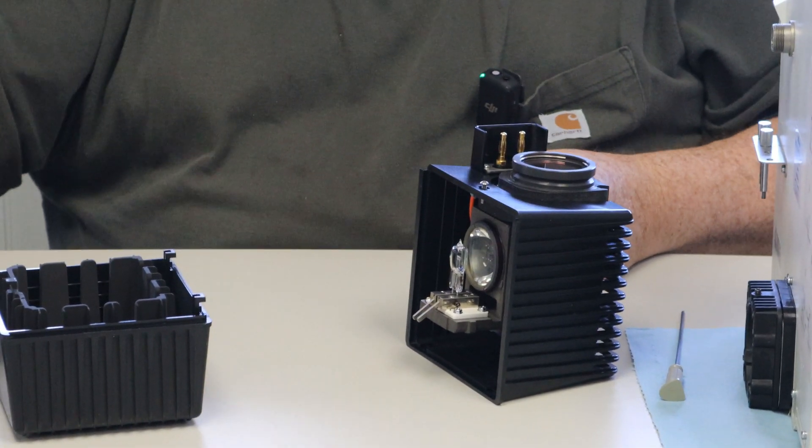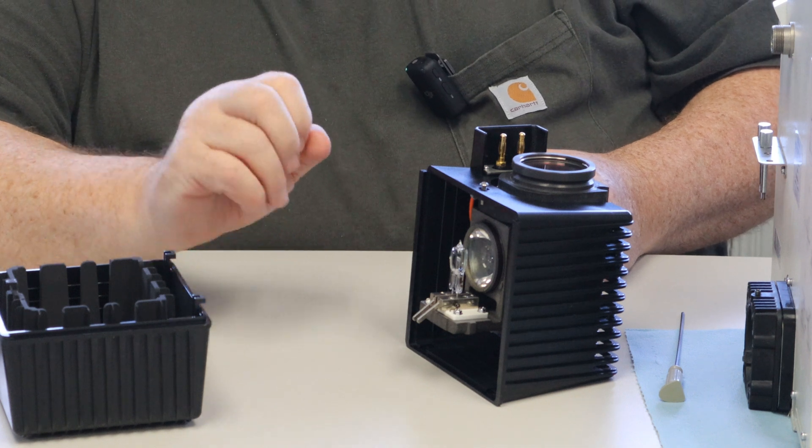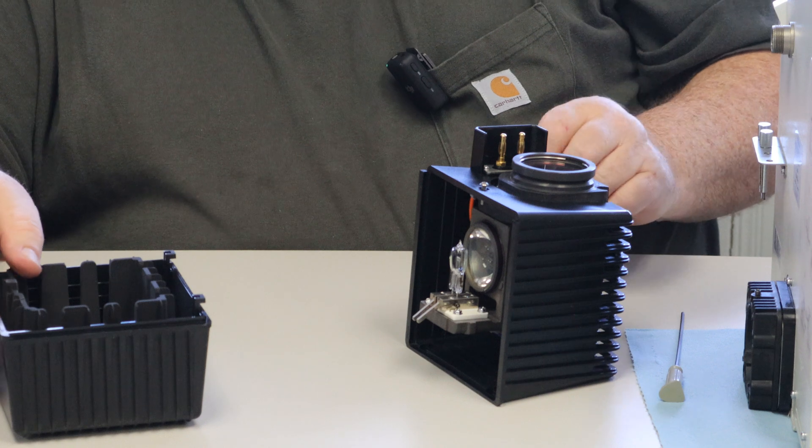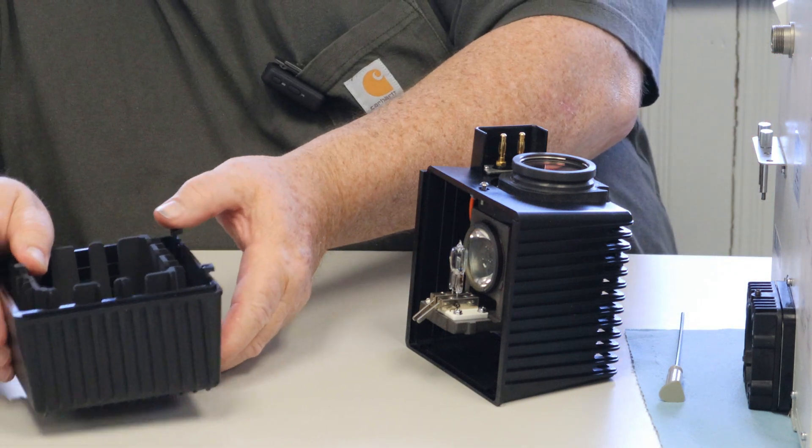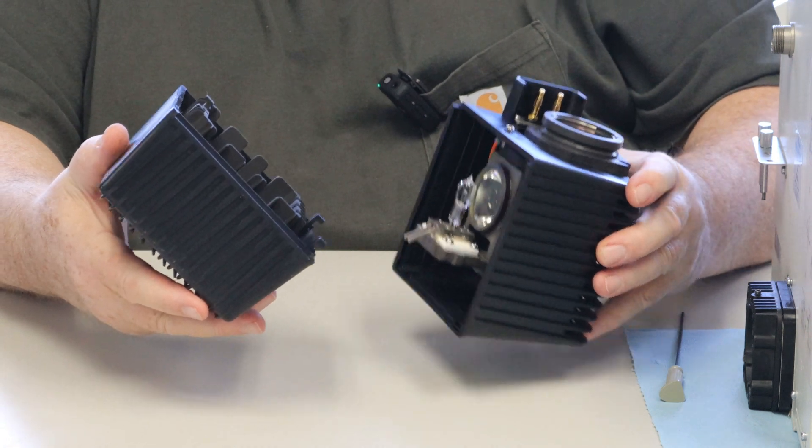Now if you do happen to get your fingerprints on the globe, you can use xylene, acetone, and a Kimwipe and simply wipe them off. But if you do not wipe them off, your fingerprints will burn into the globe and it will cause a shortened life to the bulb.